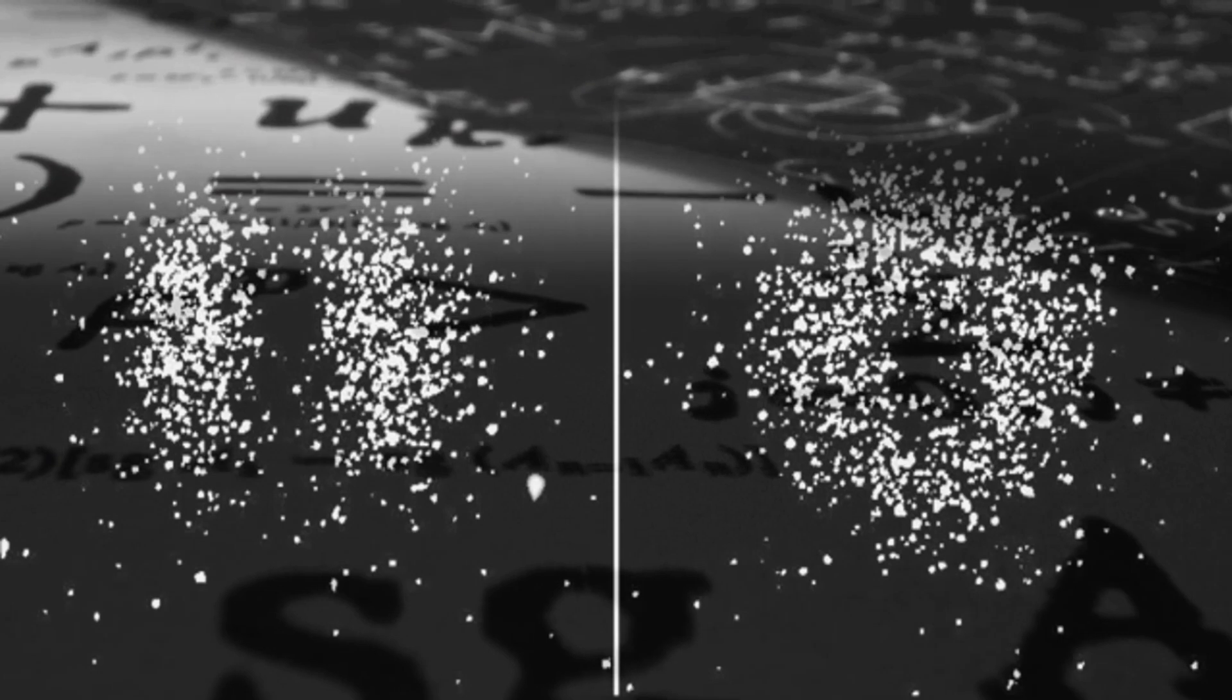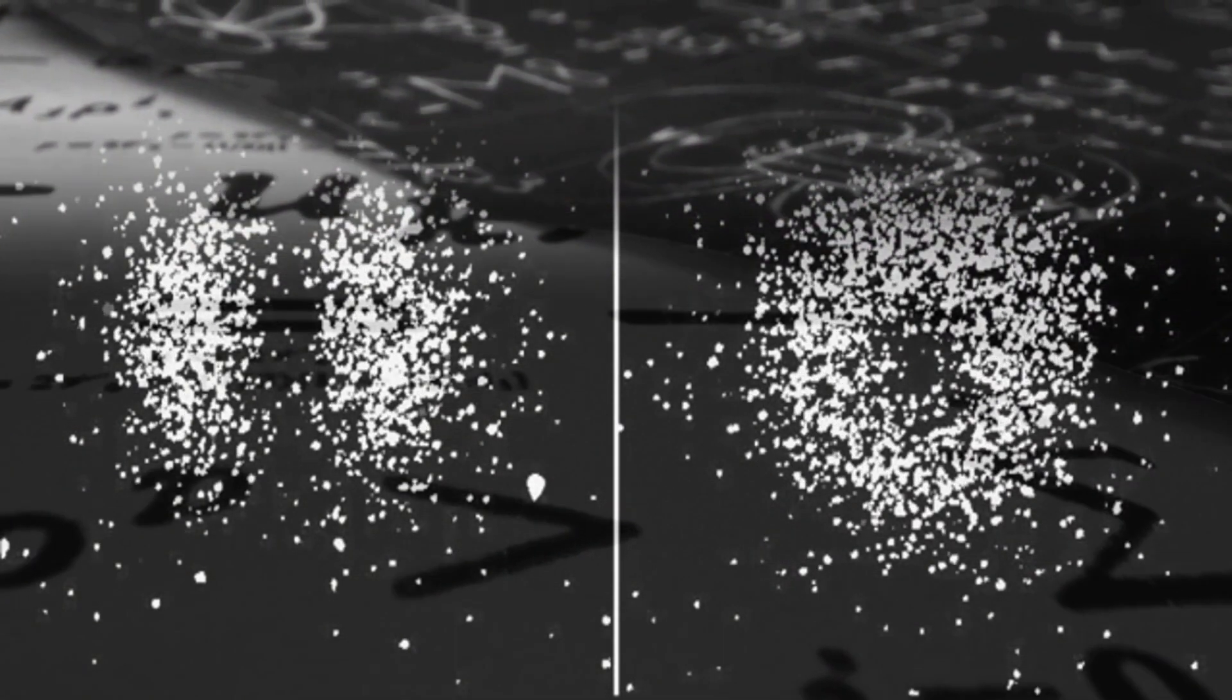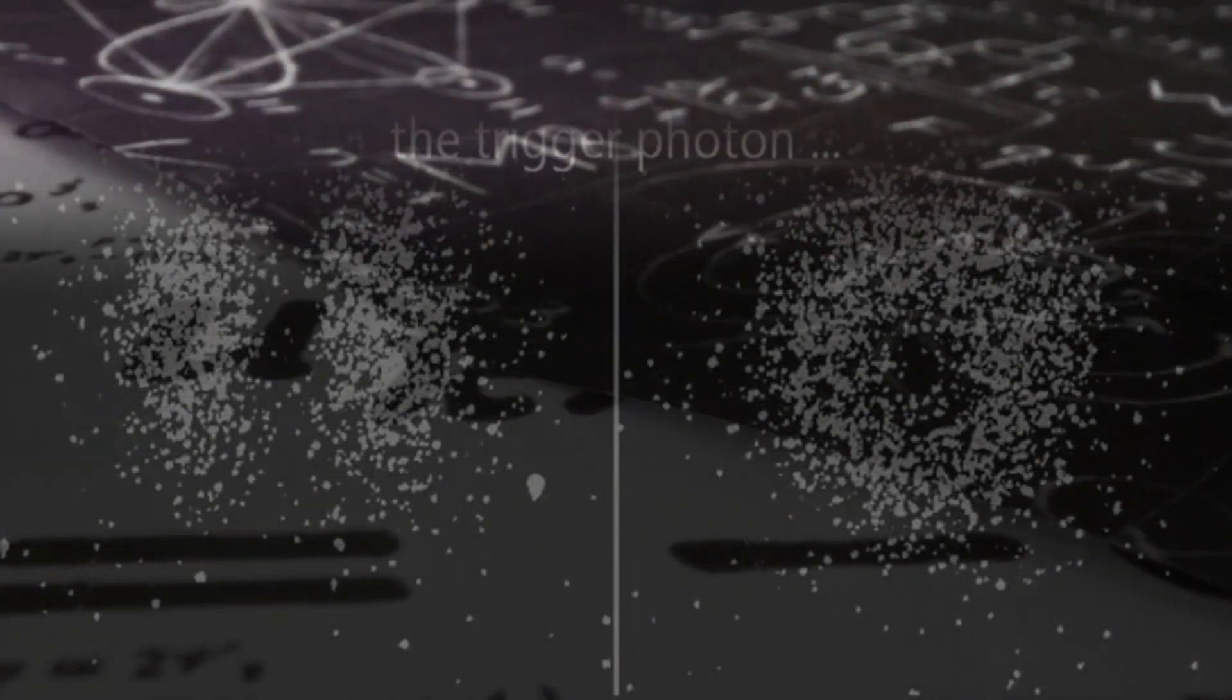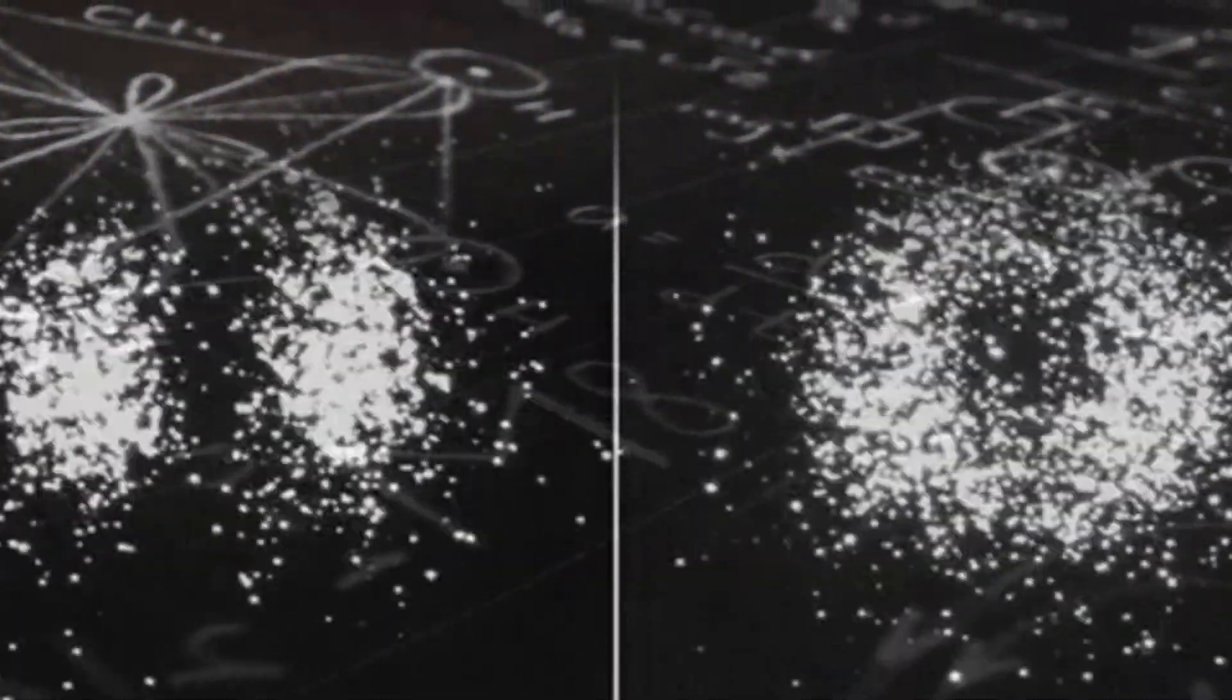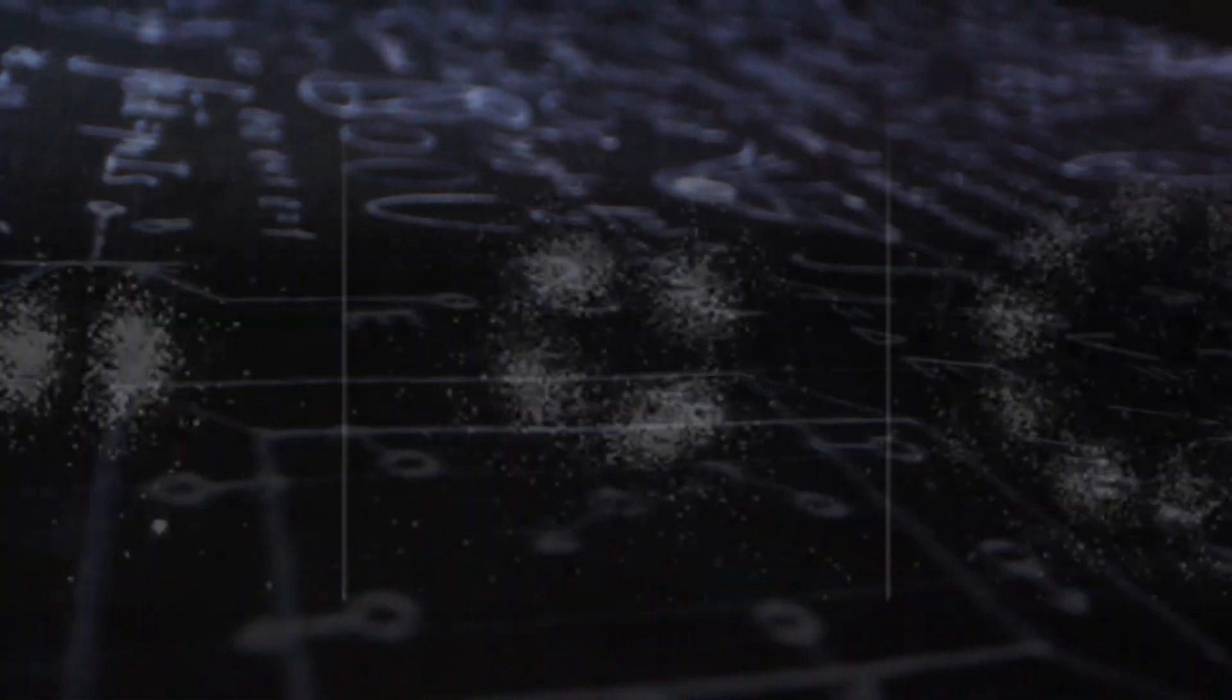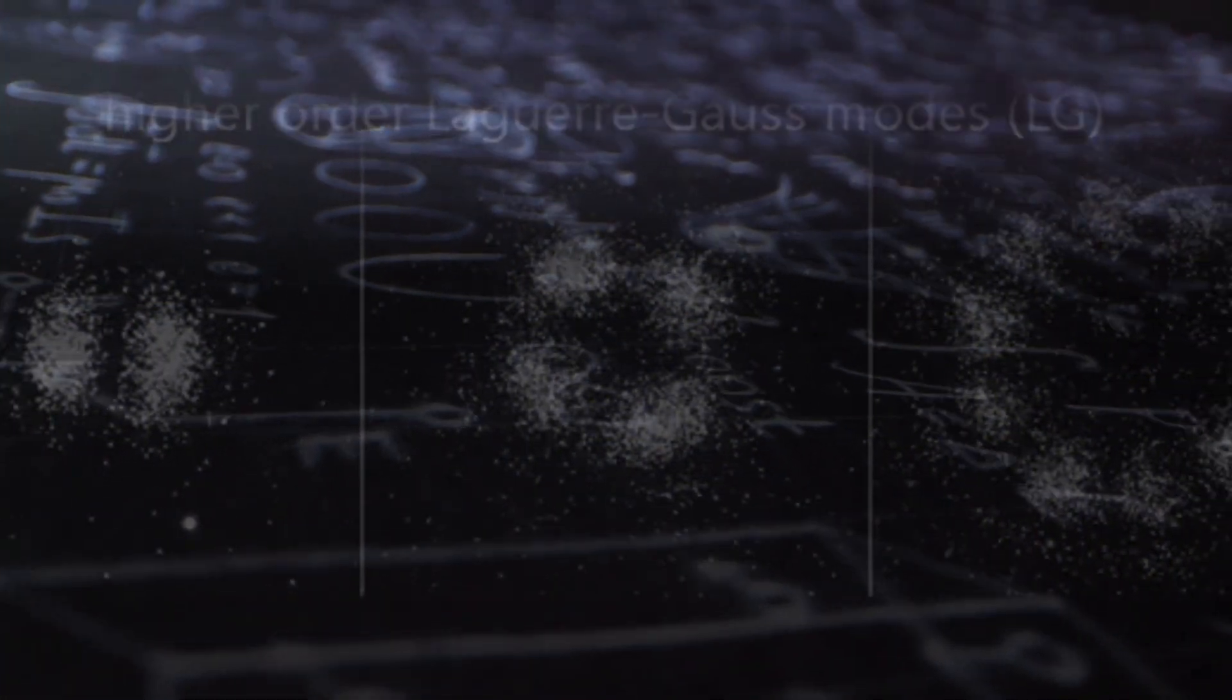Einstein's so-called spooky action at a distance wasn't just real, it was undeniable. But how could this happen? How could particles remain connected when no observable signal travelled between them?